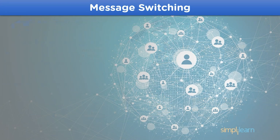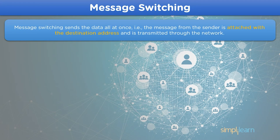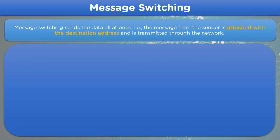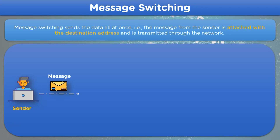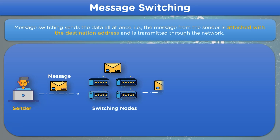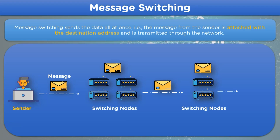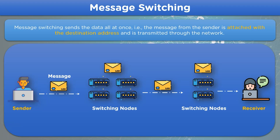Let's move on with message switching. In message switching, no predestined path is established between the sender and the destination node. This technique integrates the destination address into the data transmitted and shares it over the network. In the first step, the sender node integrates the destination address into the message. Then the whole message is transmitted to the switching node where it gets stored for the next transmission. Similarly, this transmission is repeated over the whole network, and finally, through the destination address in the data, it reaches the receiver node.